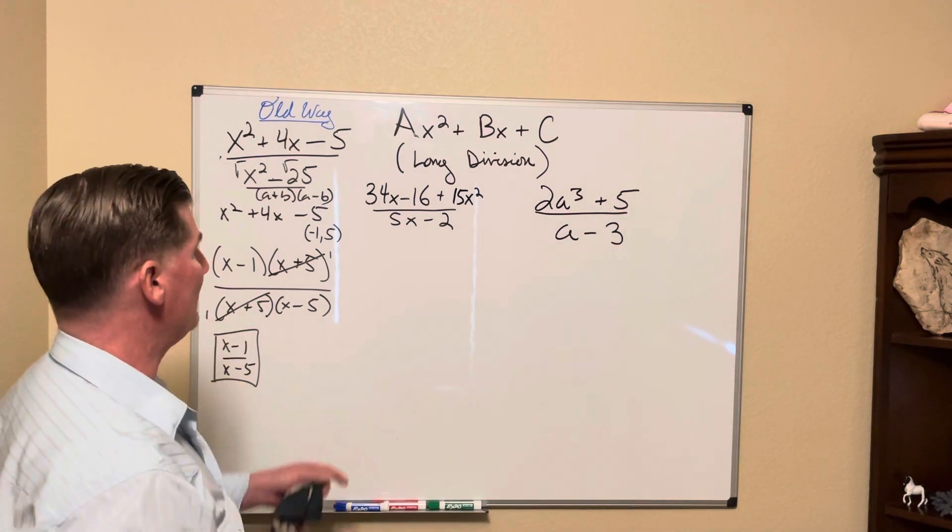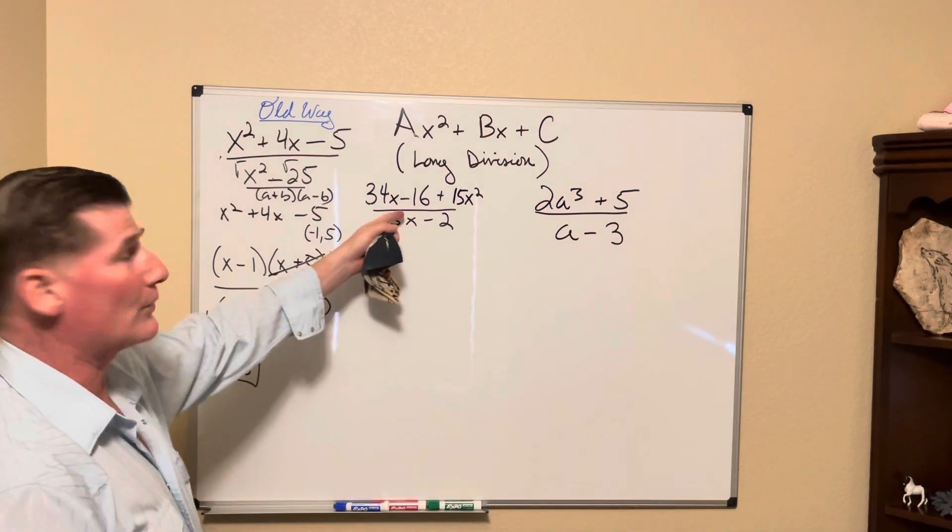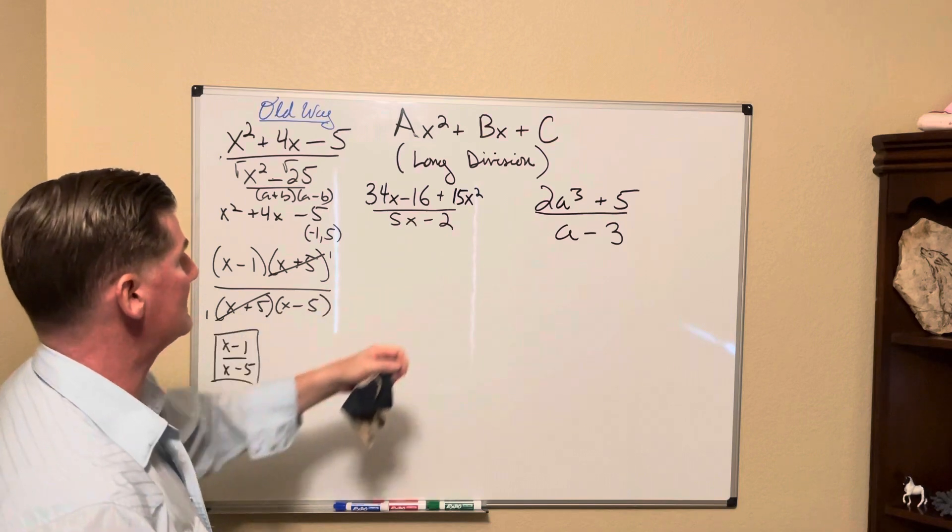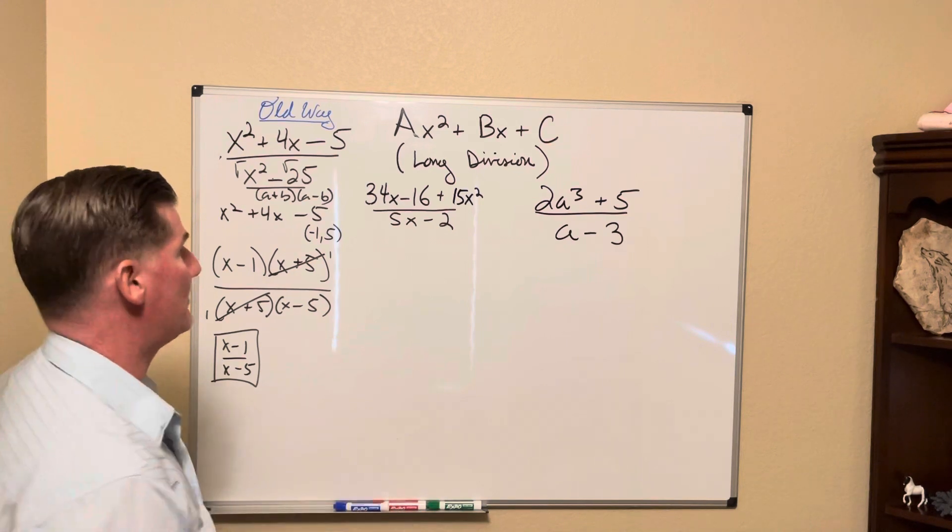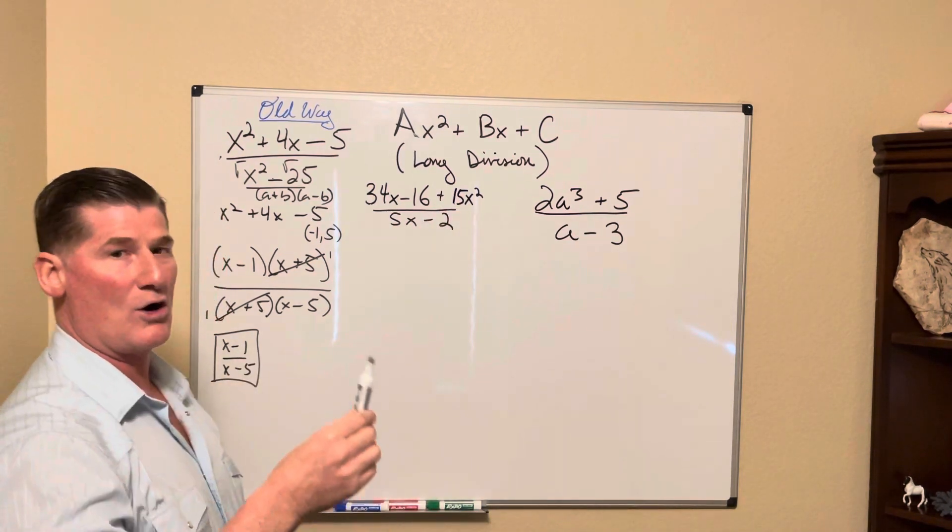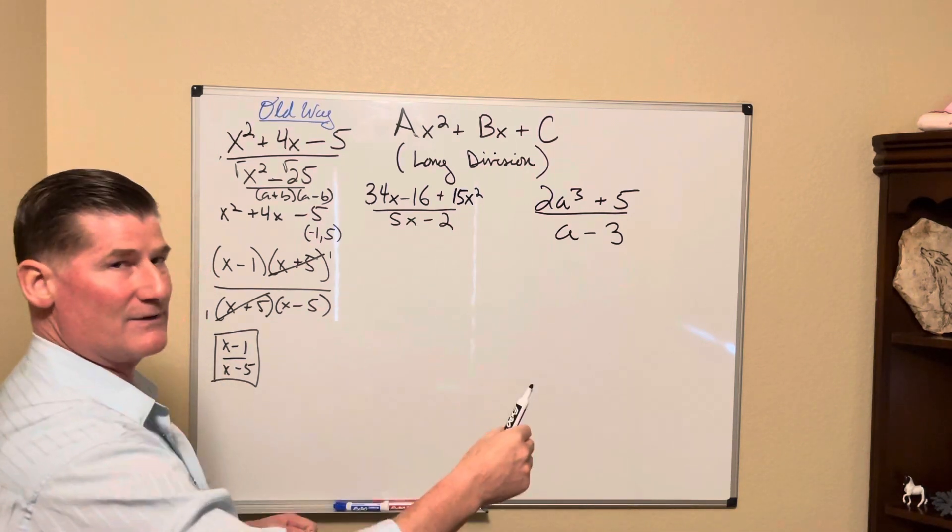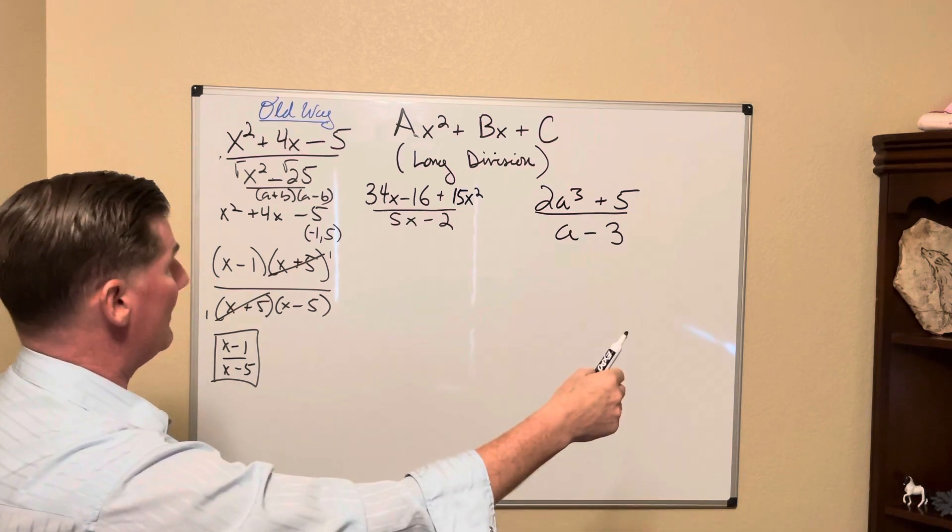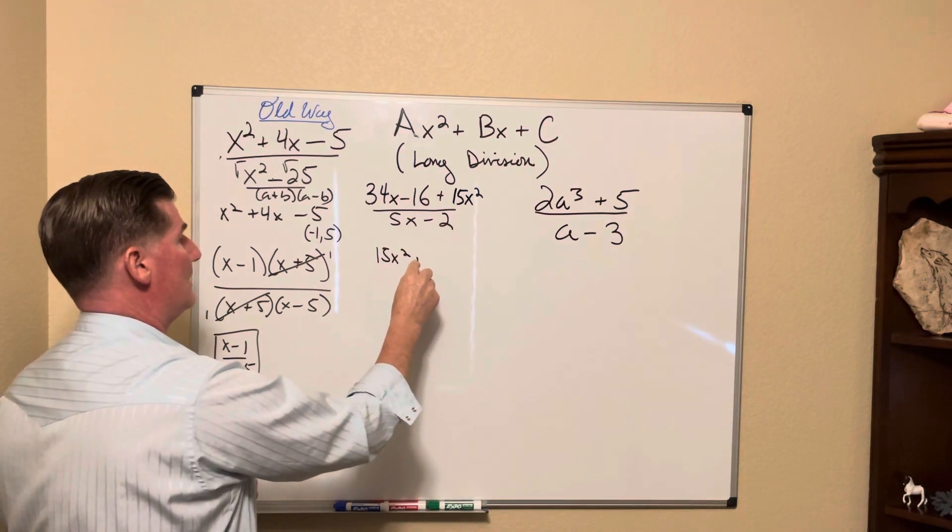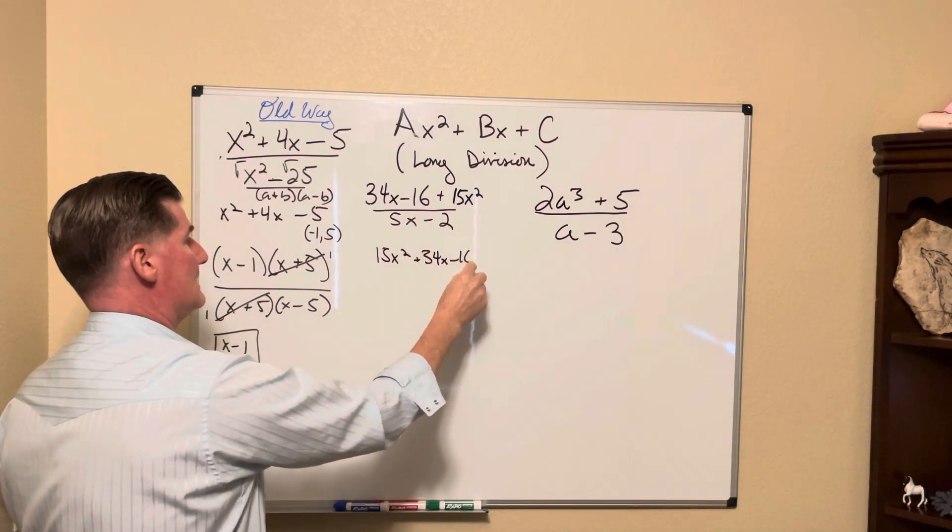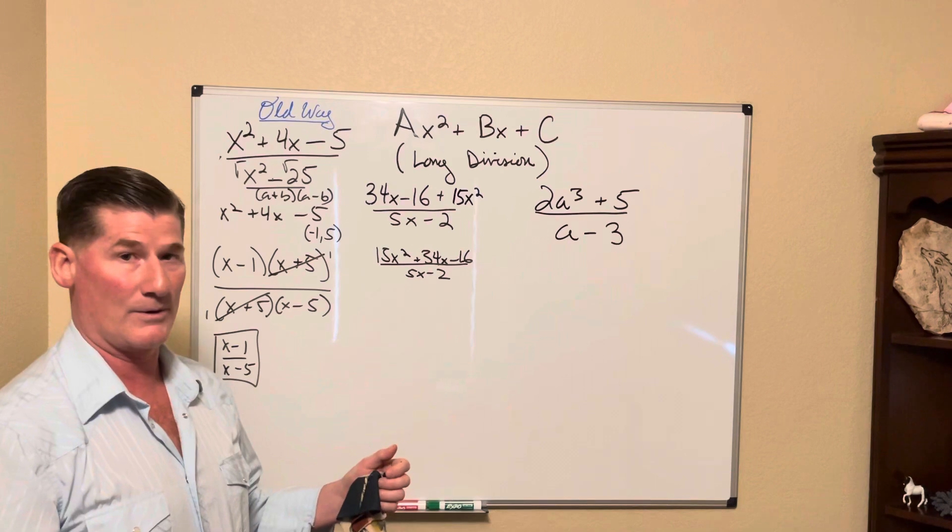However, what happens when we don't have very good terms that can be factored? Let's take a look at this one. This is a trinomial for sure. This is not, so we'll get there in a second. Notice that this trinomial is out of order. The first thing we have to do is make sure we put this in the correct order. So we typically go by the highest degree, the variable with the highest exponent, then the next variable, followed by the next variable or simple number.